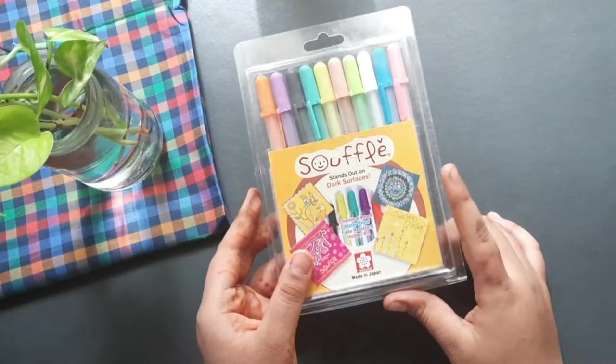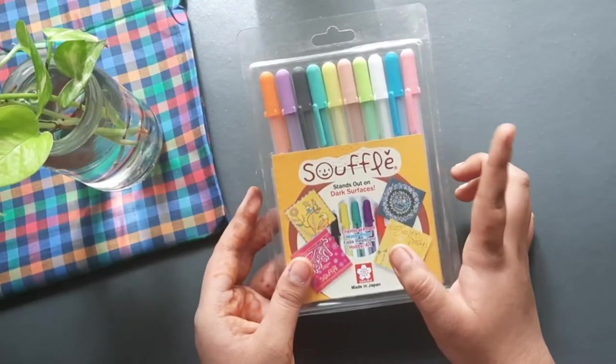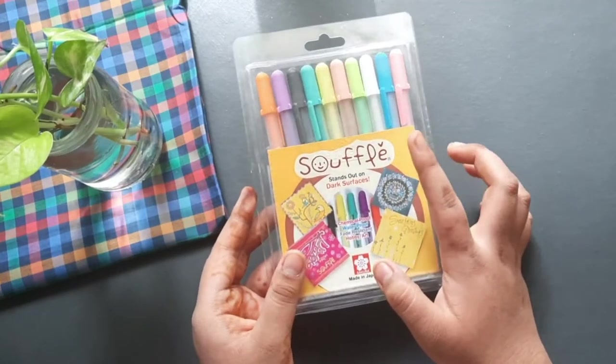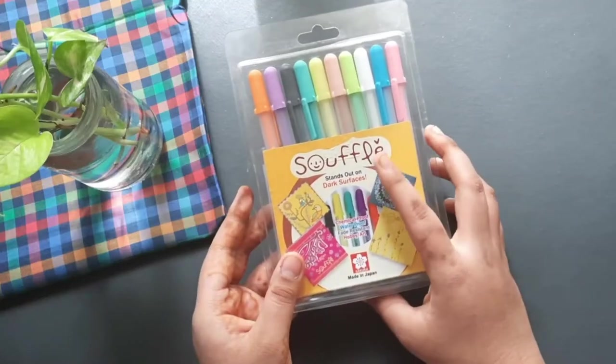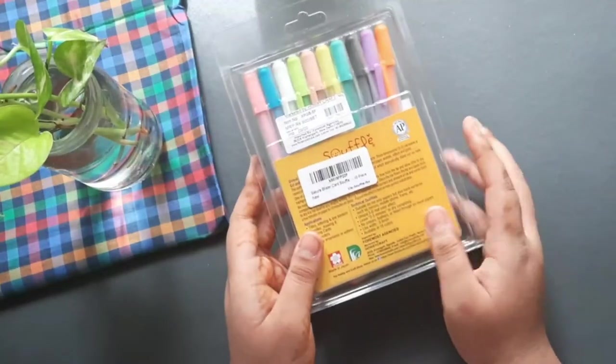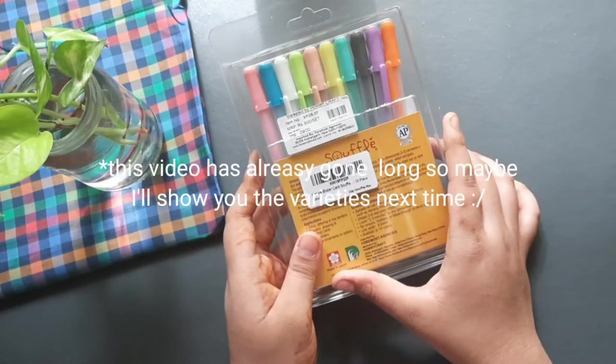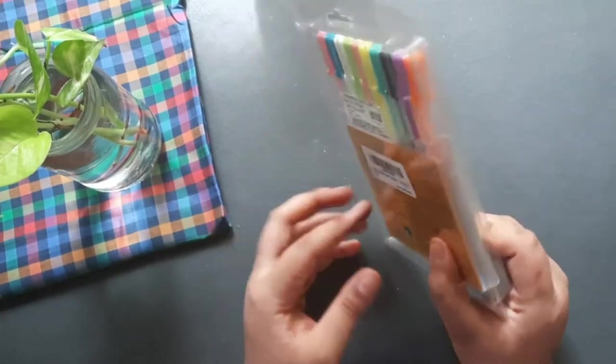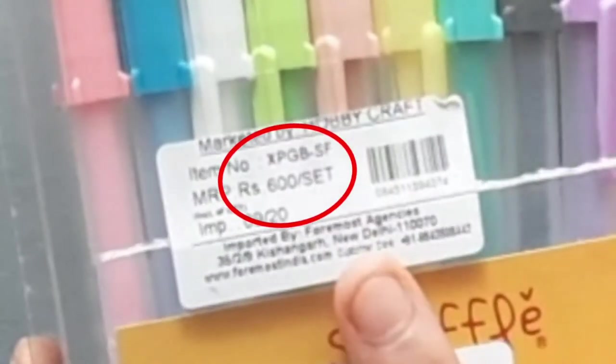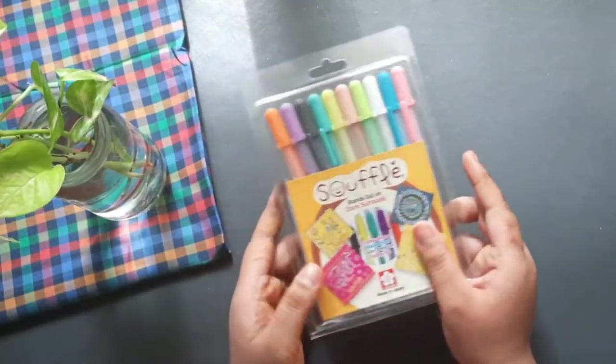So talking about the brand, it's from Sakura, it is a Japanese company and it's from the collection of jelly roll pens. Its name is Souffle. It also has various other varieties of jelly roll pens which I'll show you later on. Its price is 600 rupees which is quite expensive I know, but maybe that's because of exportations to India and so on because it's made in Japan.